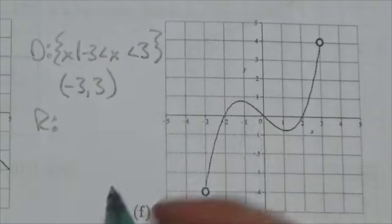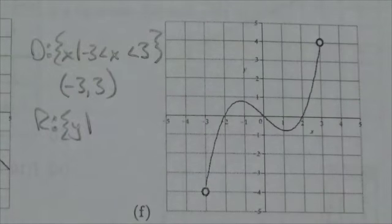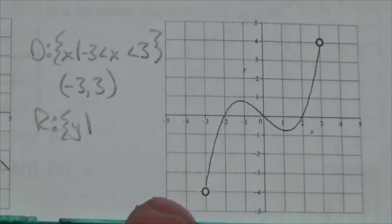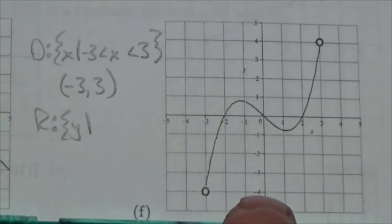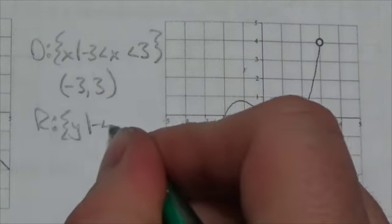My range, a similar sort of thing here. As I slide up, I don't encounter the graph until I get to the y-coordinate of negative 4. And again, not even then. But negative 4 is that lower bound.